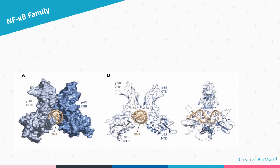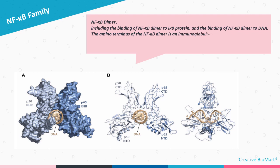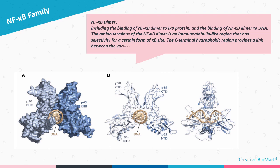In general, NF-Kappa-B exists in the form of a dimer, with two modes of existence: binding of the NF-Kappa-B dimer to I-Kappa-B protein, and binding to DNA. The amino terminus is an immunoglobulin-like region with selectivity for a certain form of Kappa-B site. The C-terminal hydrophobic region provides a link between the various subunits of NF-Kappa-B. The figure represents the structures of NF-Kappa-B: Figure A is a space-filling model of the crystal structure of the protein 50 and protein 65 heterocomplex bound to DNA, and Figure B shows the same structure in ribbon diagrams in two orientations.